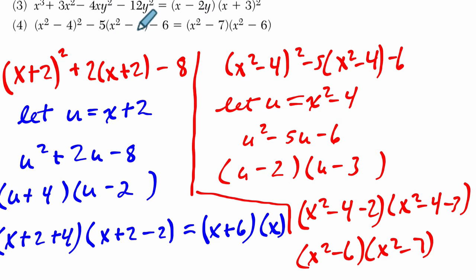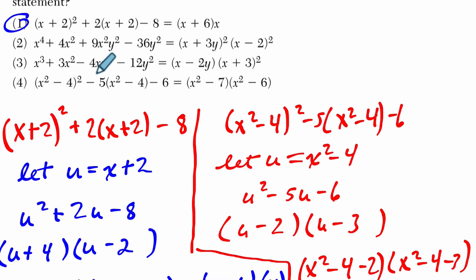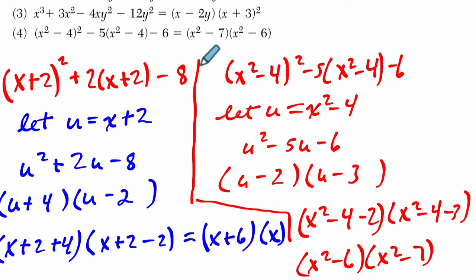And okay, cool. It looks like I got the same thing as them. Did I miss something? Let's see, (x²-4)² - 5(x²-4) - 6. Let u equal x²-4. Okay, so we have u² - 5u - 6. Oop. Negative 2 and negative 3. I made the same mistake they did. Oh boy.